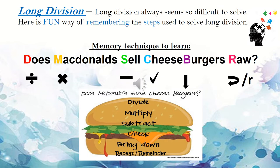Now that we understand a division sum, let's move on to long division. Long division always seems so difficult to solve. But here is a fun way of remembering the steps used to solve long division. We are going to use the memory technique. The question, does McDonald's sell cheeseburgers raw?